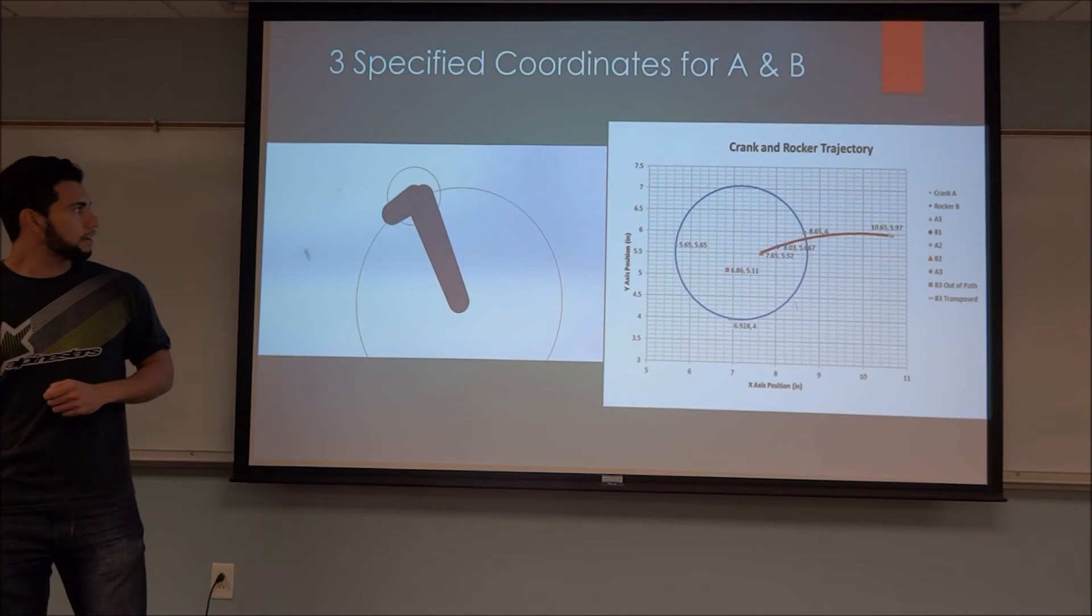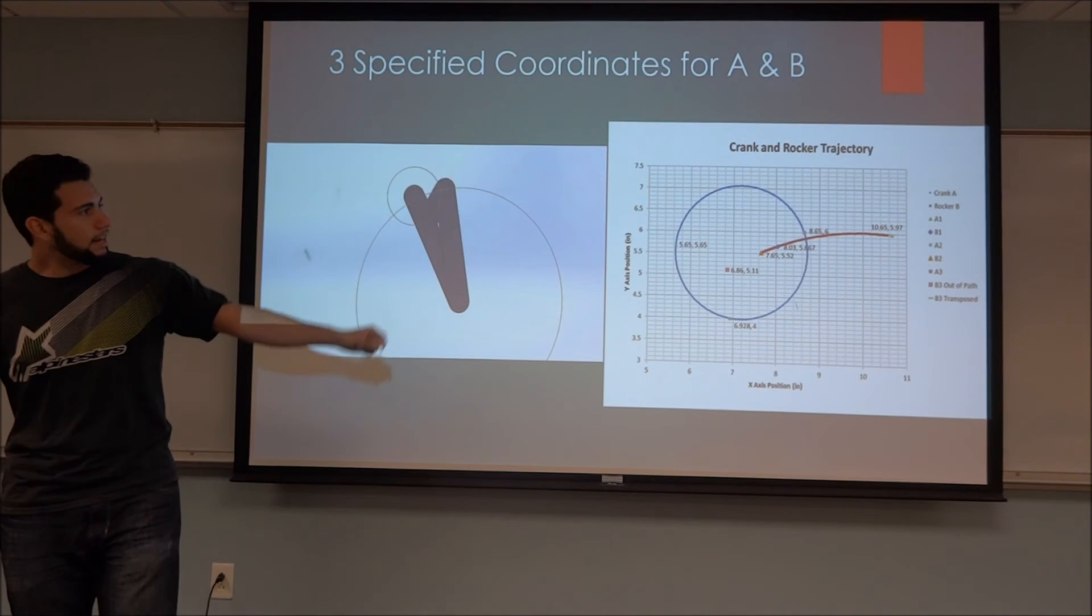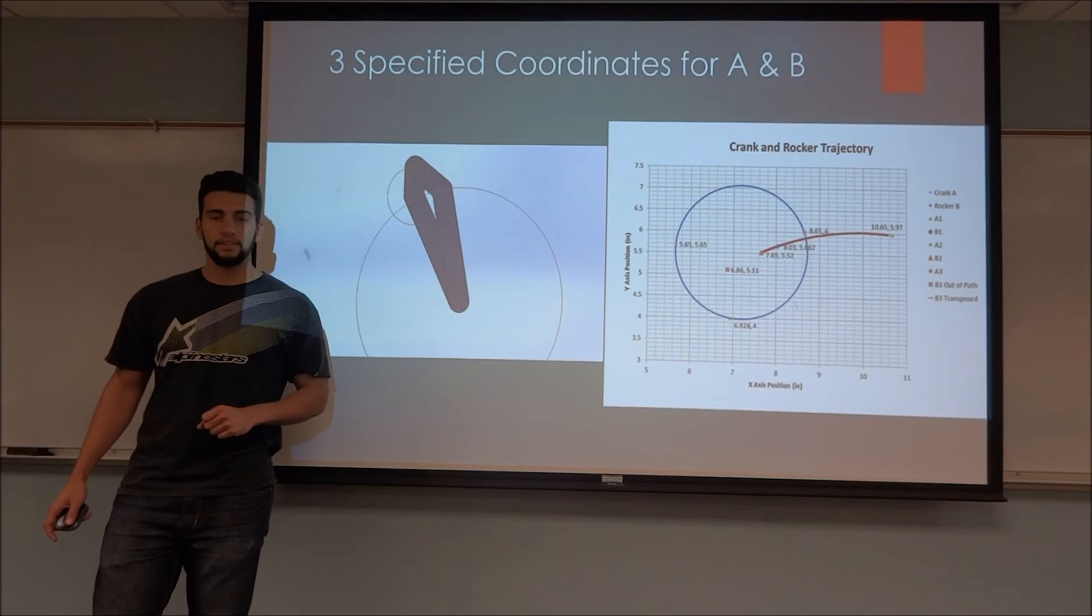And here you can see an animation of it moving. And with the Excel graph, we were also able to determine that B three in this case, the original B three, was an outlier. And that is why we chose point 10.65 and 5.97 as the new B three coordinate.